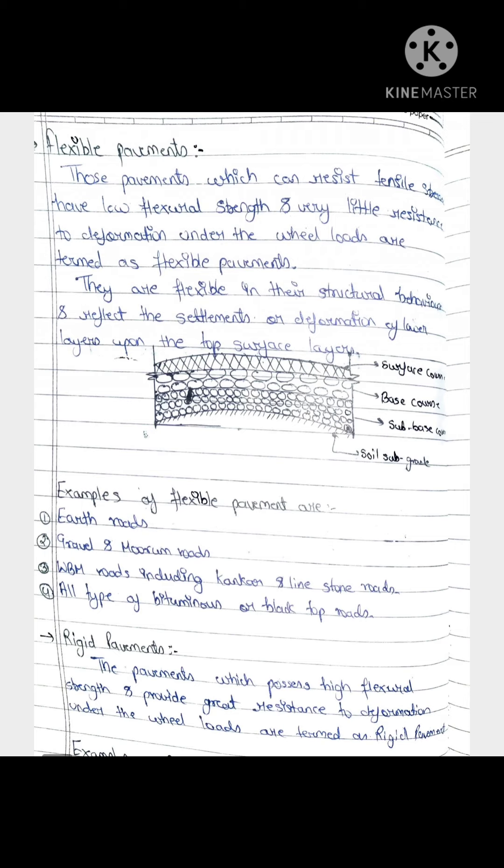Flexible pavement. Those pavement which can resist tensile stresses and have lower flexural strength and very little resistance to deformation under the wheel load are termed as flexible pavement. They are flexible in their structural behavior and reflect the settlement or deformation of lower layers upon the top surface layers.